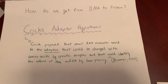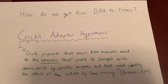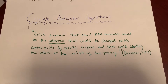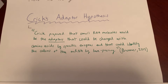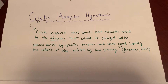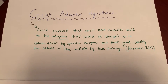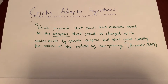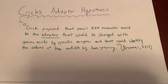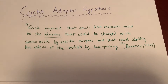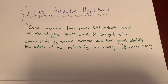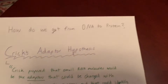Today we're going to talk about how we get from a DNA molecule to a protein. Crick's adapter hypothesis states that small RNA molecules would be the adapters that could be charged with amino acids by specific enzymes, which could identify the codons of the mRNA by base pairing, and then make the final protein.